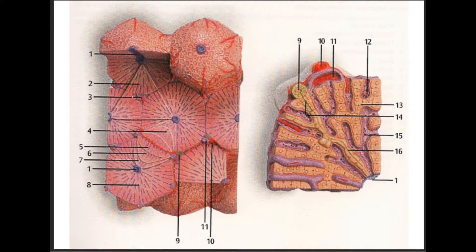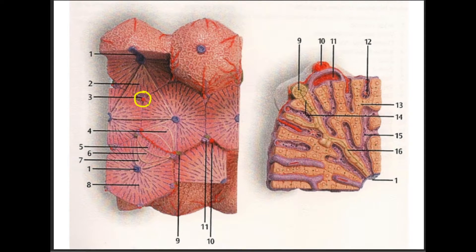Number two is the portal liver lobule. Number three is the portal canal, also known as the portal triad. Once again, it consists of the hepatic artery, the hepatic portal vein, and the bile duct.